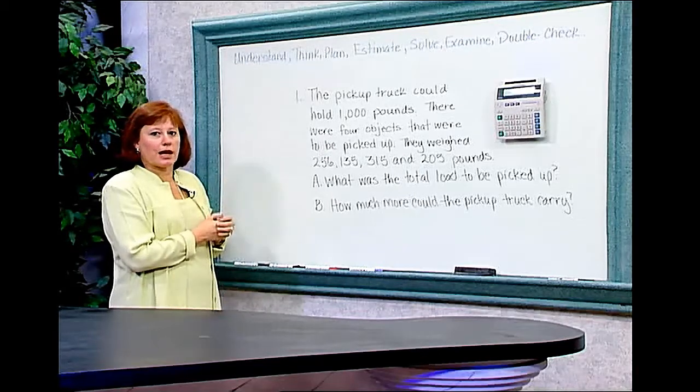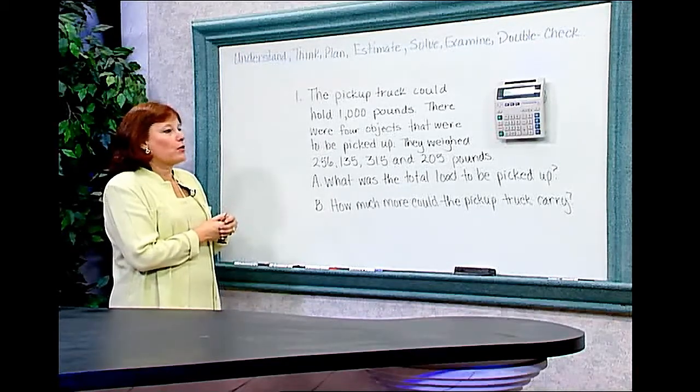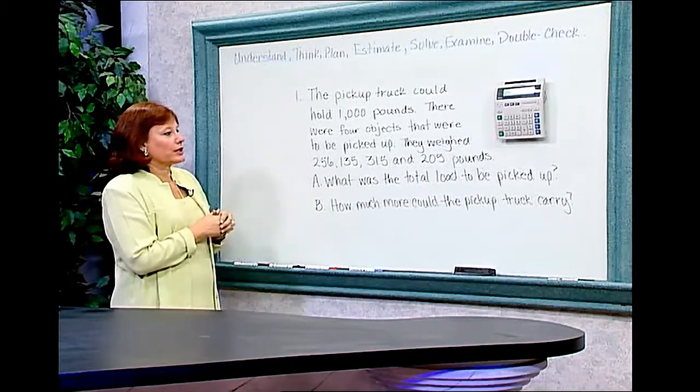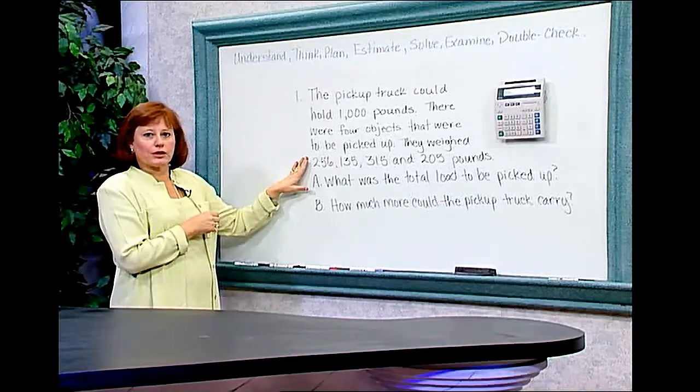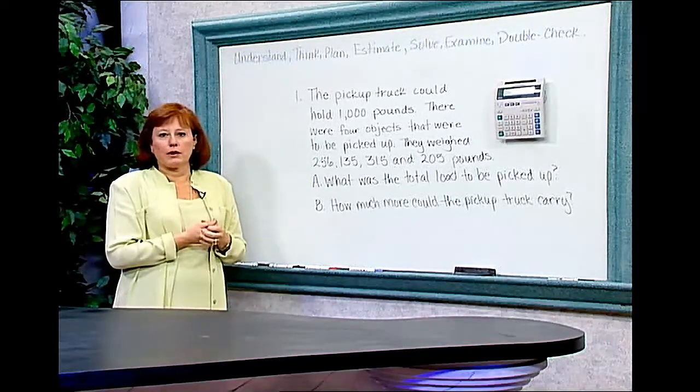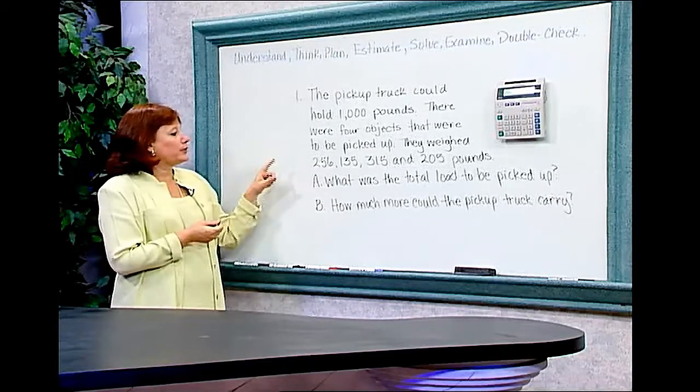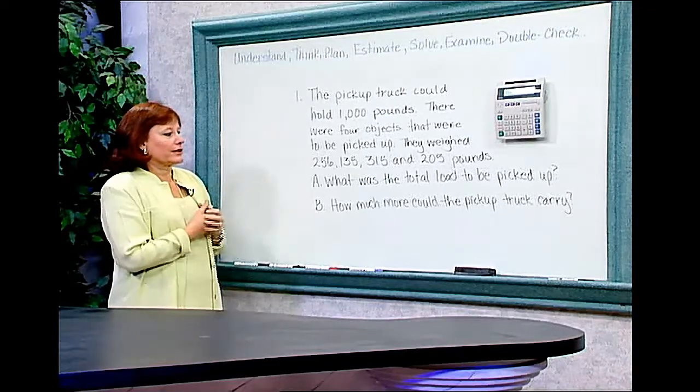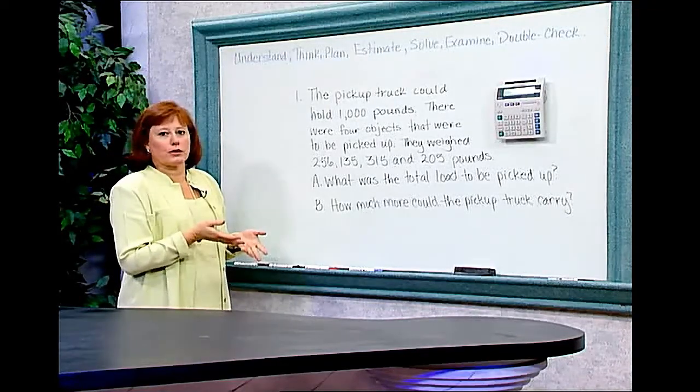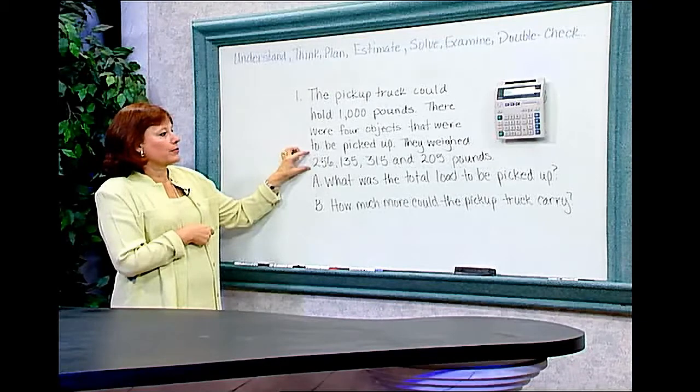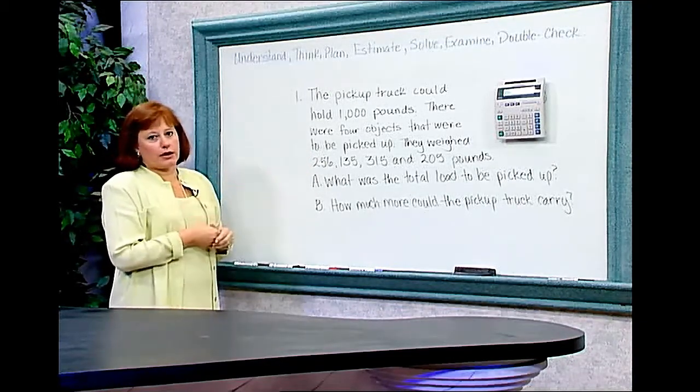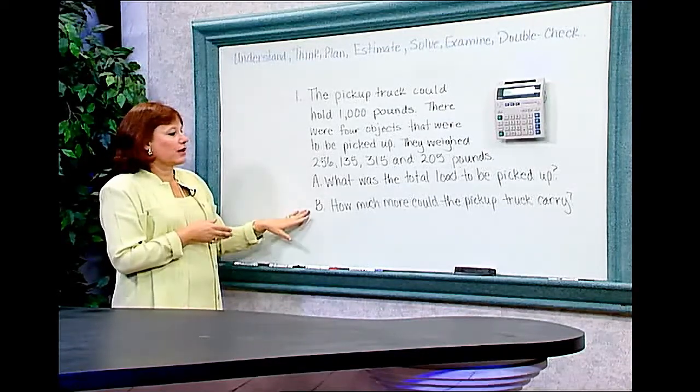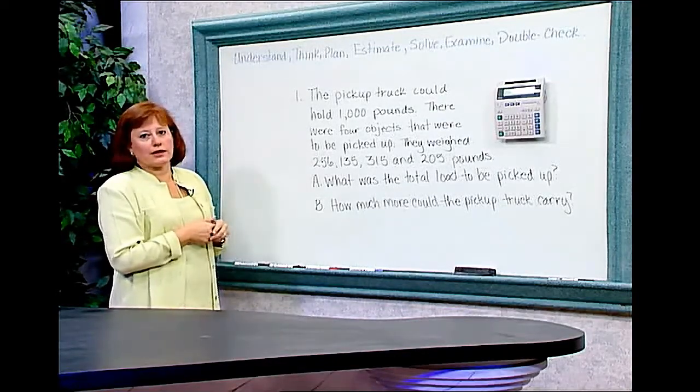I'm going to think about possible solutions and come up with a plan. If I want to know how much weight the truck is going to be required to carry when I pick up these four objects, I'm going to want to add the weight of those four objects together. That will give me the total weight that the truck will be required to carry. So my plan for question A will be to add up the different weights. My plan for question B is slightly different. It says, how much more could the truck carry? It will already have the weights combined from problem A, and I know that it can carry up to 1,000 pounds. So I'll want to find out if there's any extra space. I'll take the 1,000 pounds and subtract the weight that's already been picked up.